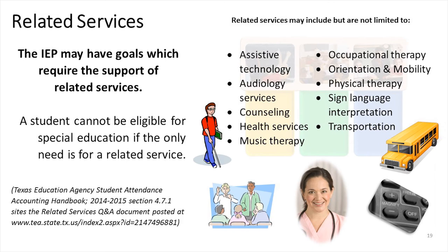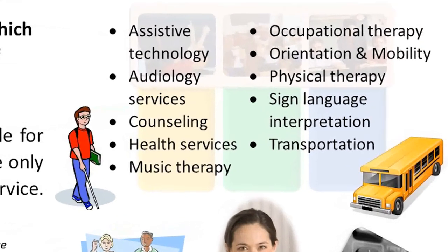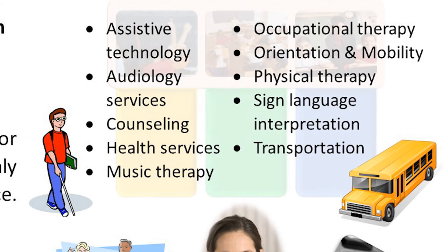Related services are supplemental supports to the specially designed instruction identified in the IEP. Some goals will require related services to support implementation. Related services do not stand in isolation, nor can they be the only support or service needed by the child. Some examples of related services may include assistive technology, audiology services, counseling, health services, music therapy, occupational therapy, orientation and mobility, physical therapy, sign language interpretation, or transportation.